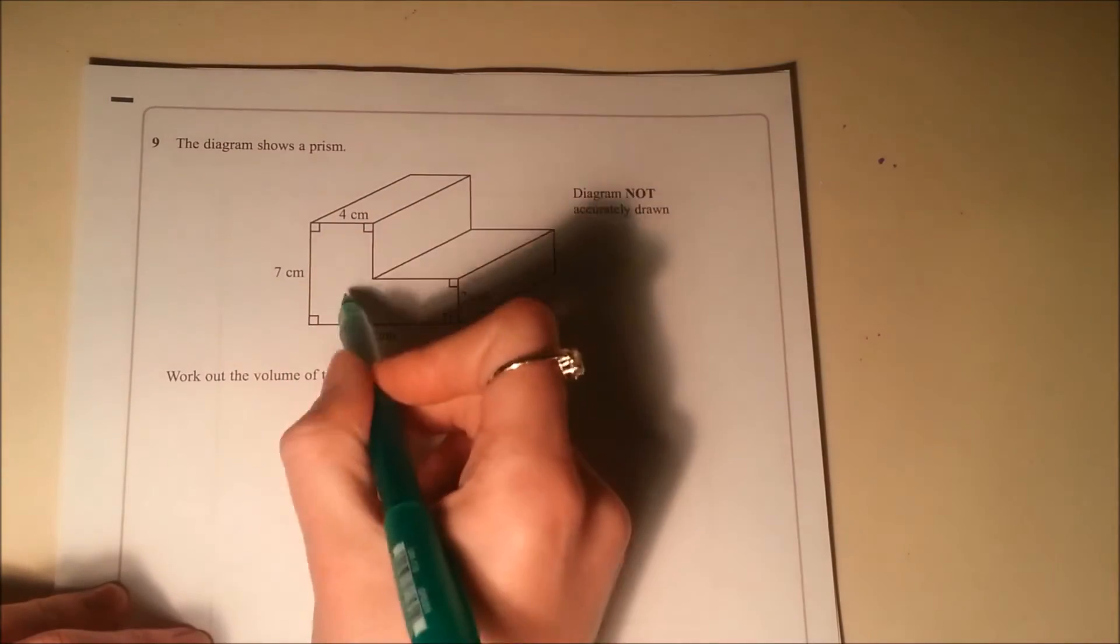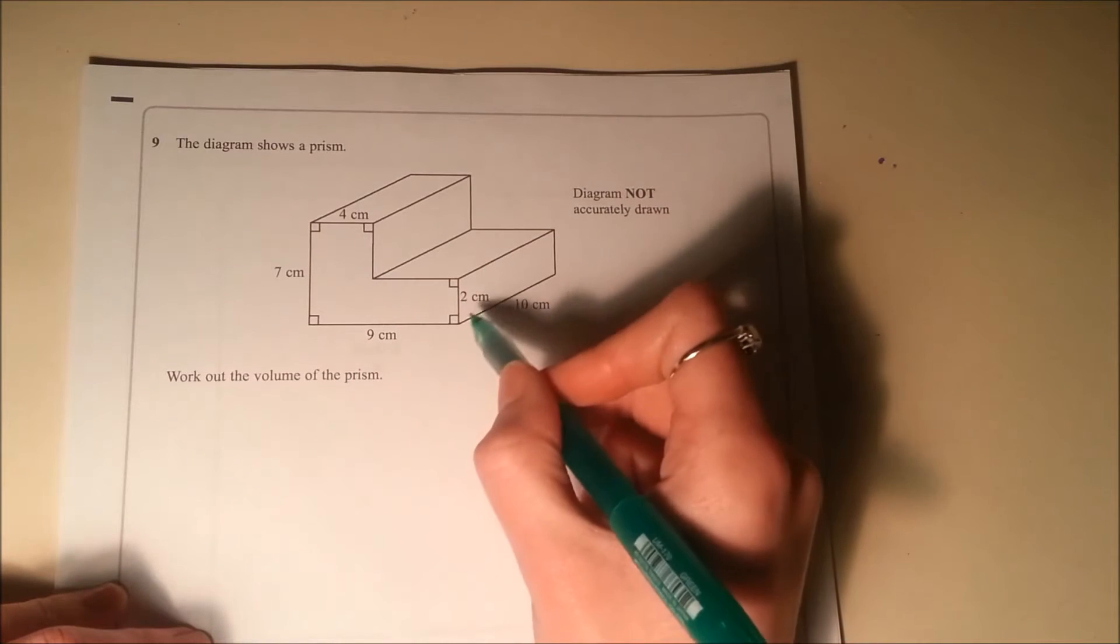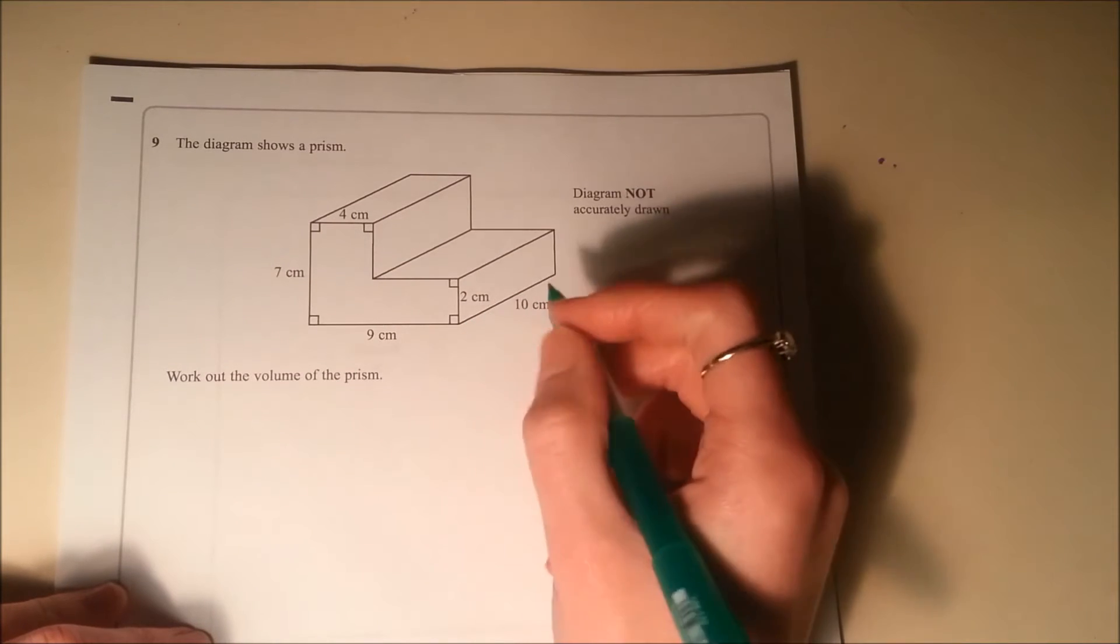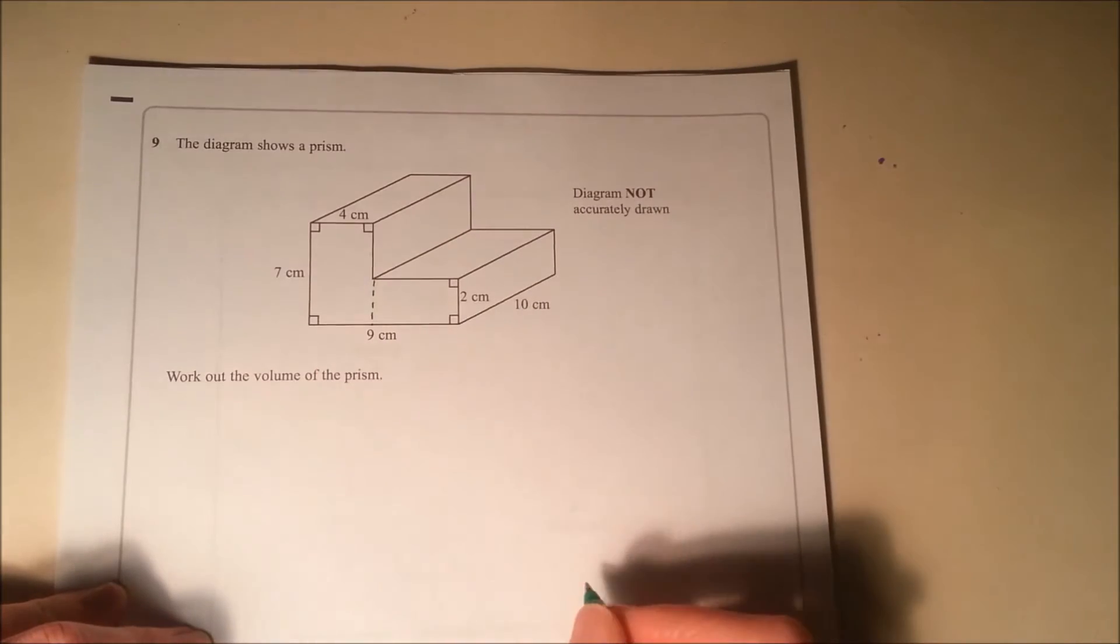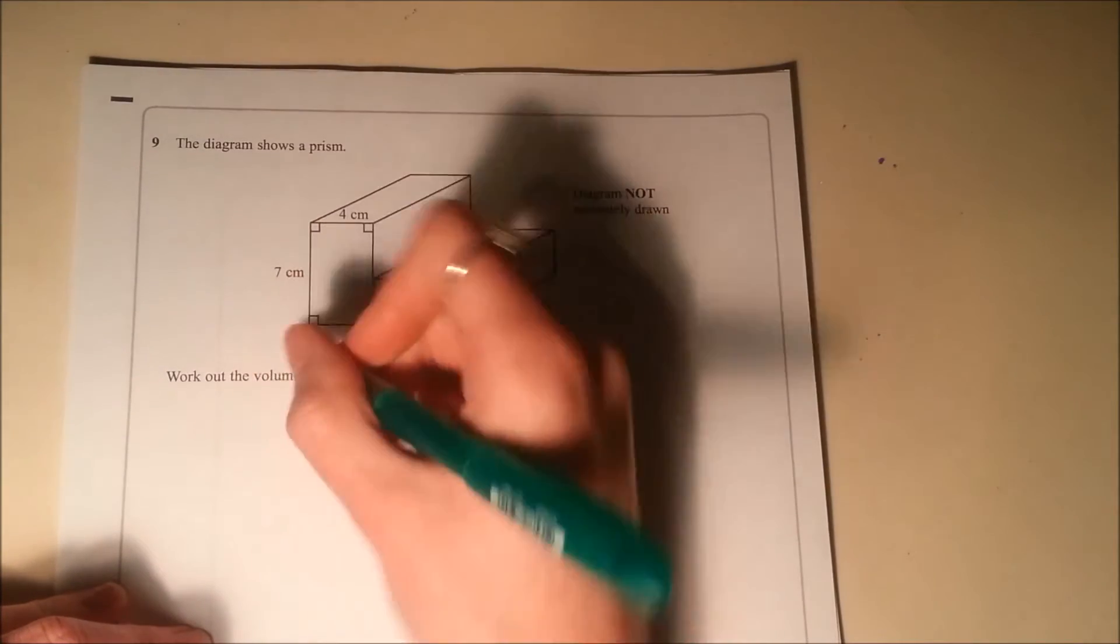So we need to work out the area of this shape on the end and then multiply it by the length here. So I think split this up into two rectangles so we can work out this one quite easily.